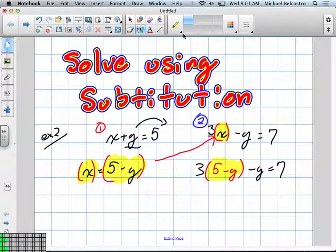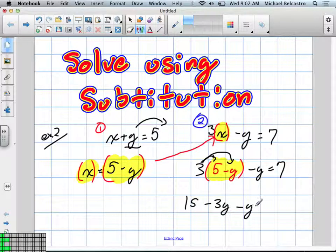Now that I do that, I need to isolate the only variable left, and the only variable left in this equation is y. So we're going to solve for y now. When I'm going to solve for y, I need to distribute. We're going to get 15 minus 3y minus y equals 7.